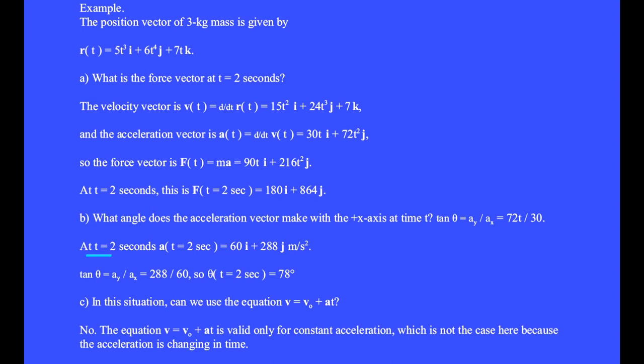At t = 2 seconds, the force is 180i plus 864j, because 90 times t, which is 2, makes 180.